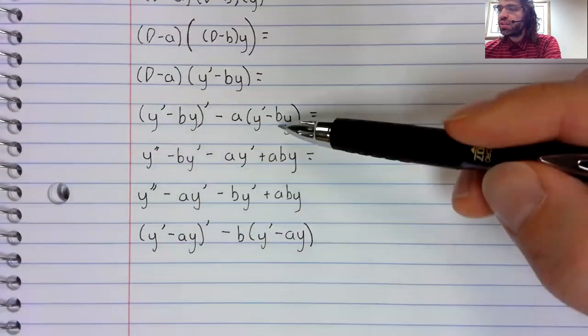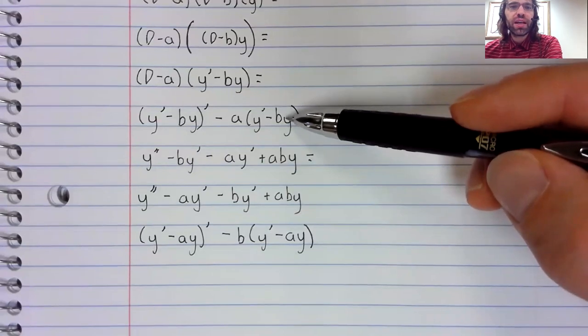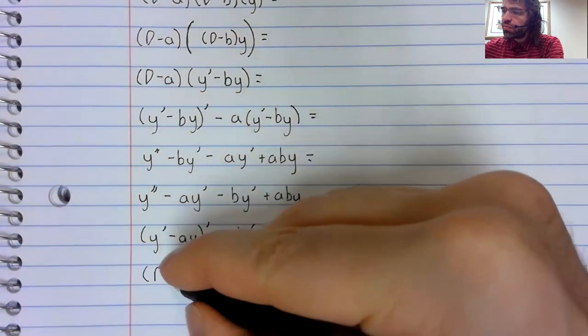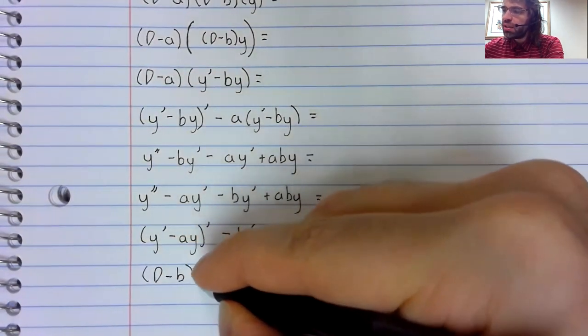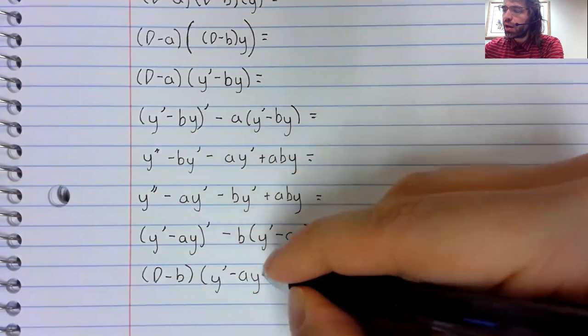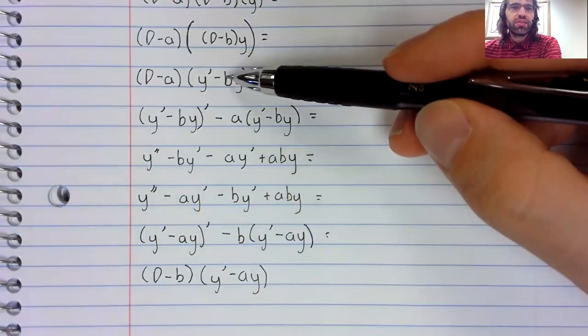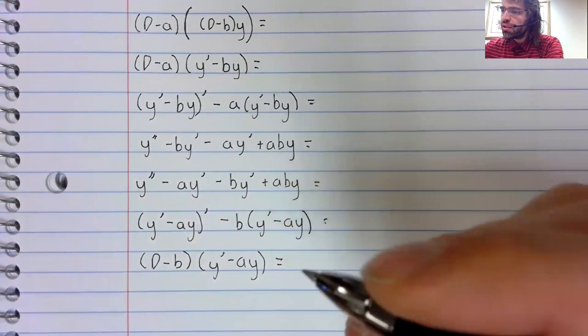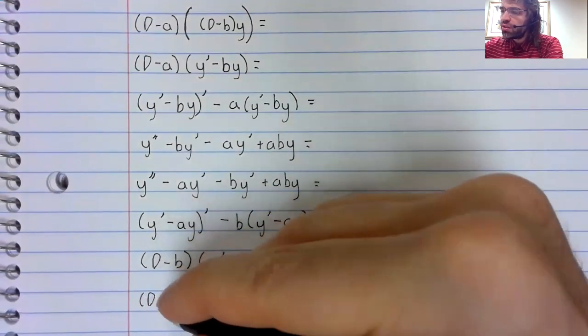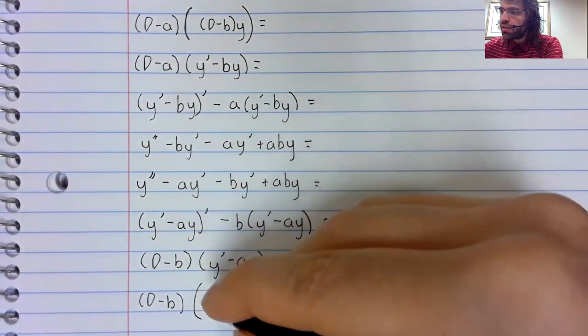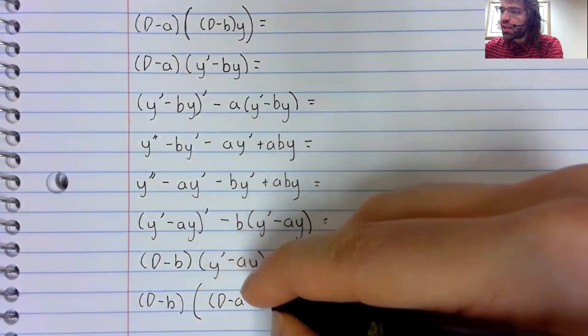So we've basically gone up here, except now our a's and b's are in different places. This is d minus b applied to y prime minus a y. We've gone up to here, except our a's and b's are in different places.